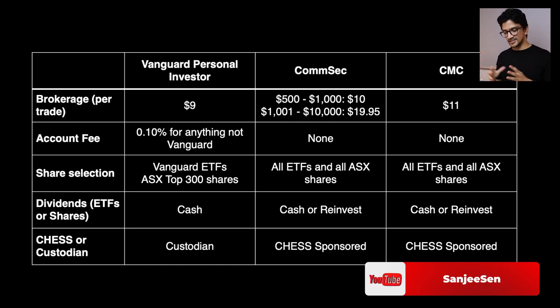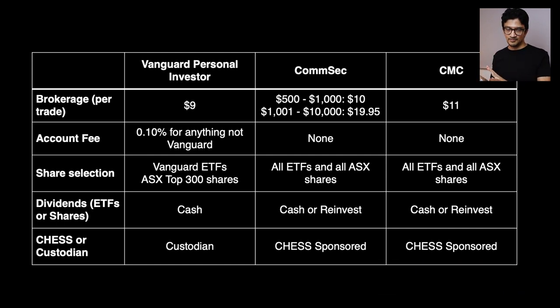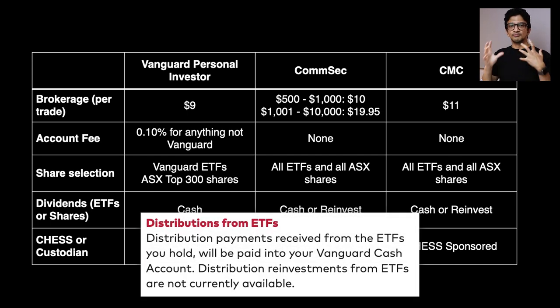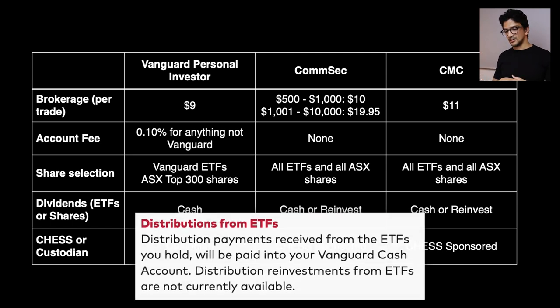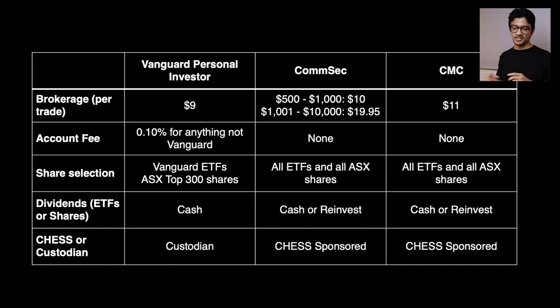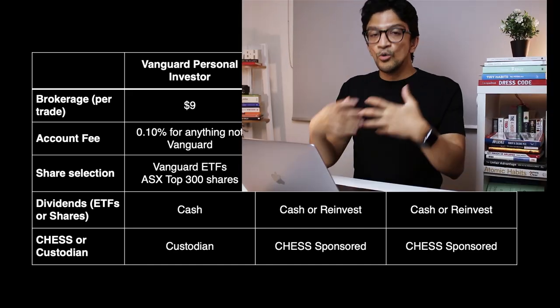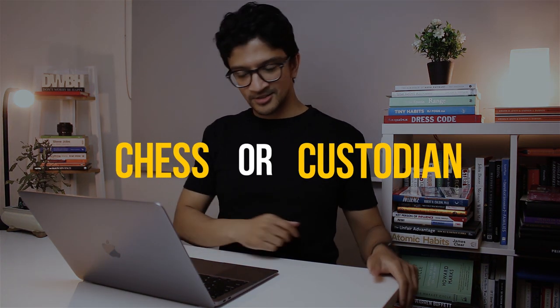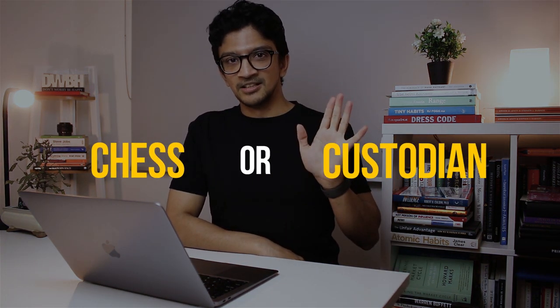Regarding dividends, with Vanguard personal investor you cannot automatically reinvest them. The dividend arrives in your cash account and you have to manually buy more shares. With Comsec or CMC you can have automatic reinvestment via DRP plans. Interestingly, Vanguard does offer its own DRP plans, but when you invest in a Vanguard ETF through the Vanguard personal investor platform, you can't use those DRP plans.